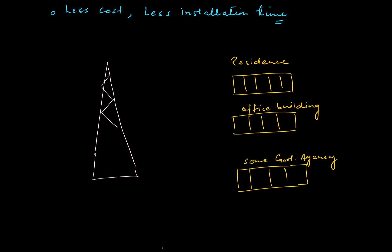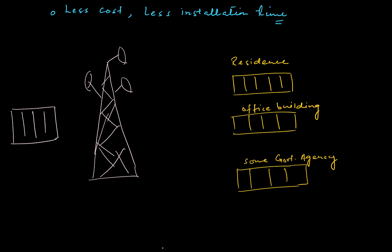Through a common base station with certain antennas, and in the back end there is a building with the proper equipment and machinery. From the building to the tower, you have a wired link, and from the base station you have wireless links to all the different buildings.